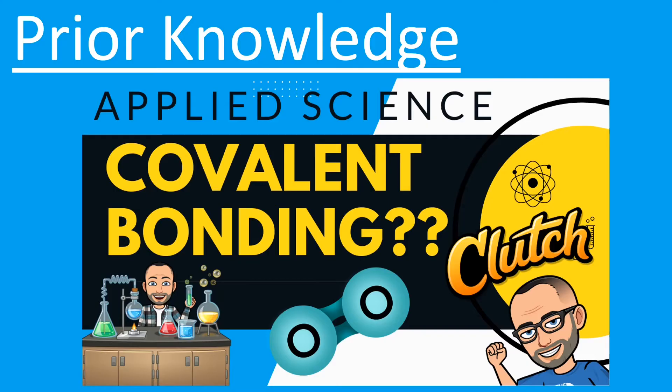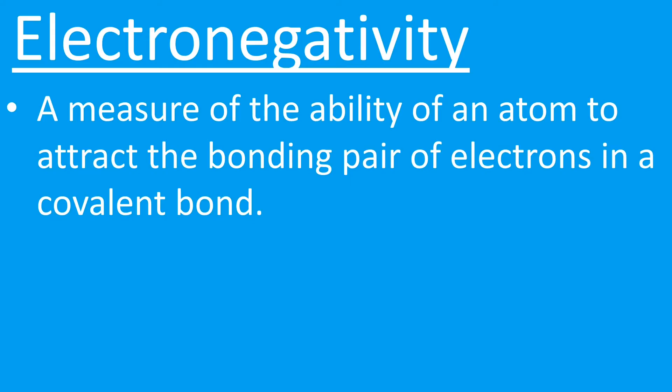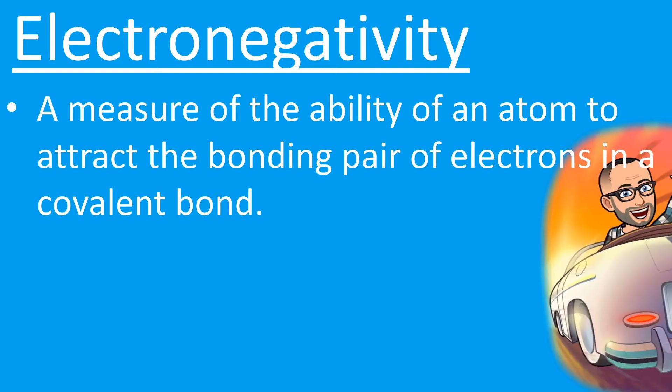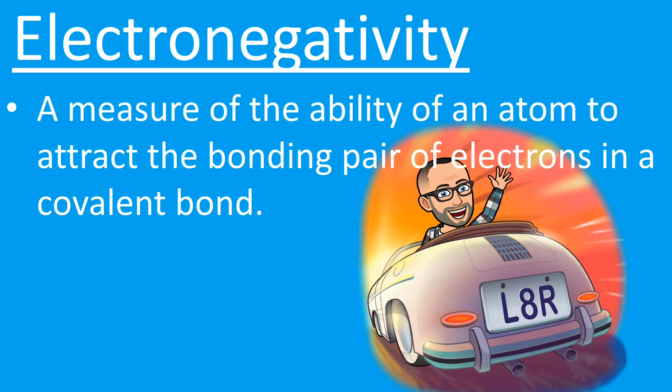So we do need to know about this term electronegativity. Now a definition for electronegativity is the measure of the ability of an atom to attract the bonding pair of electrons in a covalent bond. Now we actually look at this in detail in Learning Aim A2, so there'll be more on this in a future video.